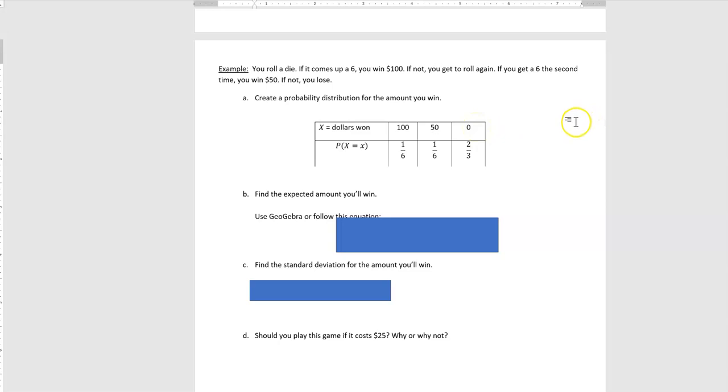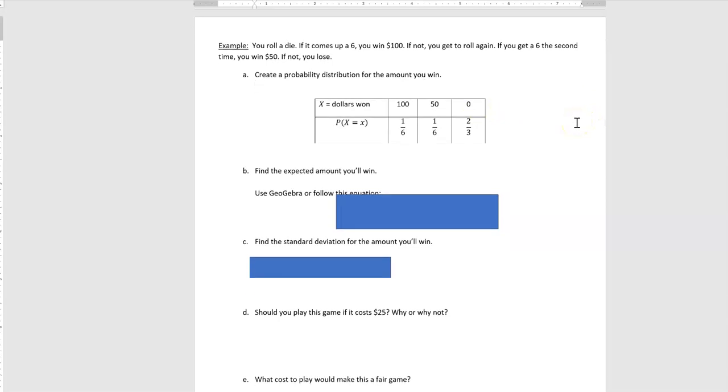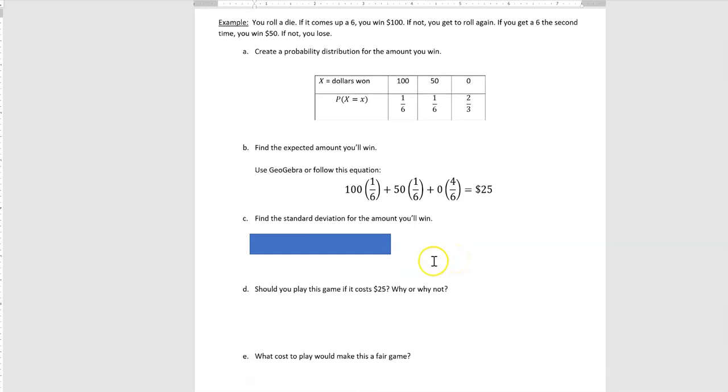And then it says find the expected amount you will win. Well, you're going to win based on a weighted mean. You can use GeoGebra just like we were doing, or if you wanted to calculate it yourself, this is what GeoGebra will be doing. They would say 100 times one-sixth, because 100 times its probability, plus 50 times one-sixth, plus zero times—and I put four-sixths here just to help see where that two-thirds came from—that equals $25. So you could go in and enter your $50, $100, and zero on GeoGebra, or you could go in and then enter the one-sixth, one-sixth, four-sixths, and then look for that mean as we did in the previous example earlier in the video.